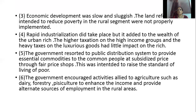The third strategy: economic development was slow and sluggish — meaning slow and inactive. The land reforms intended to reduce poverty in rural areas were not properly implemented. The government enacted many land reform acts such as the Land to the Tiller Act and Land Ceiling Act, but they did not effectively reduce rural poverty.